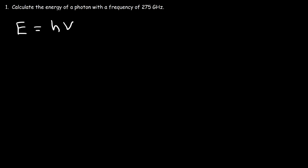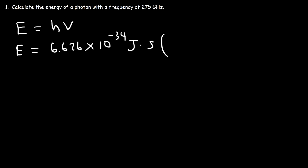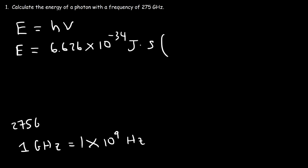The value of Planck's constant is 6.626 times 10 to the negative 34 joules times seconds. The frequency is 275 gigahertz, which we need to convert to hertz. One gigahertz is a billion hertz — 10 to the 9. So 275 gigahertz is 275 times 10 to the 9 hertz. You just replace gigahertz with 10 to the 9 for a simple and quick conversion.